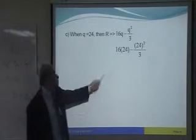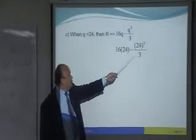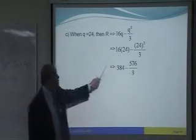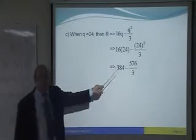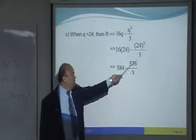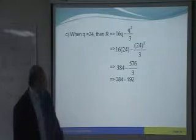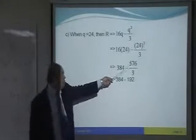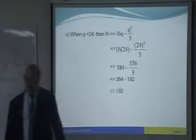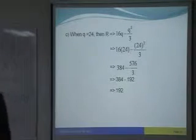So, you will get 16 times 24 minus 24 square over 3. From here, 16 times 24, you use your calculator. You will get 384. 24 square, you get 576 divided by 3. So, your answer will be 384 minus this one divided by 3. You get 192. And this minus this, your answer is 192.